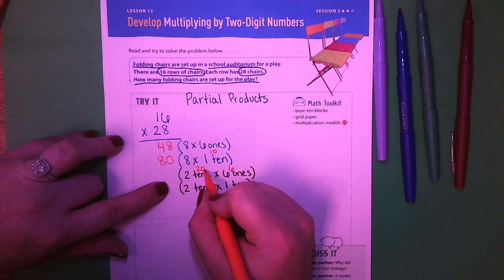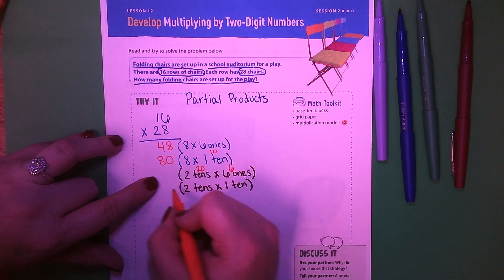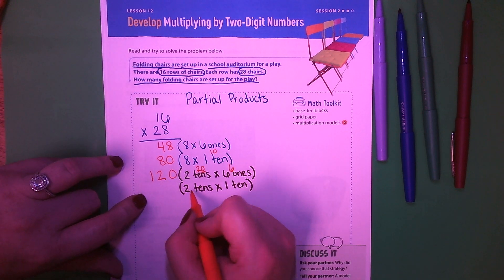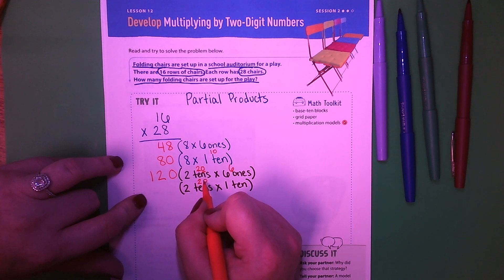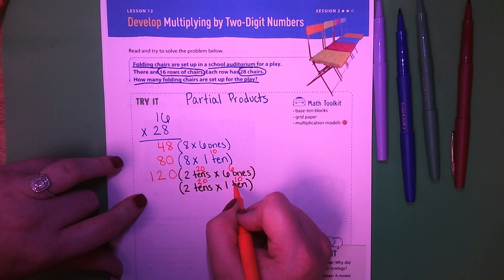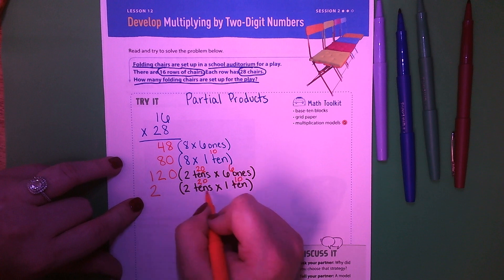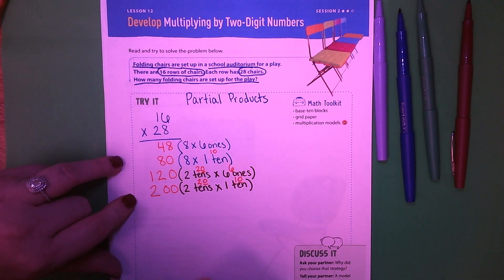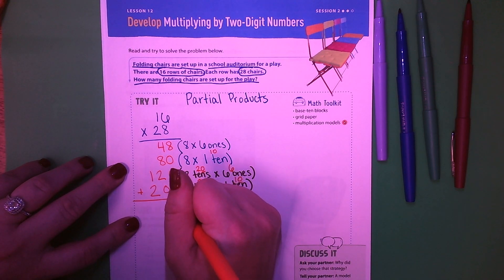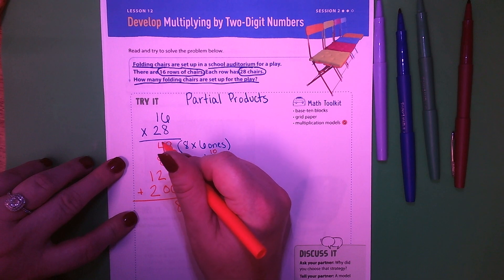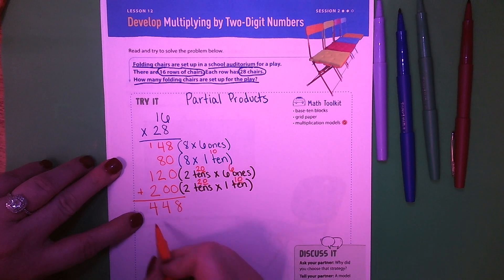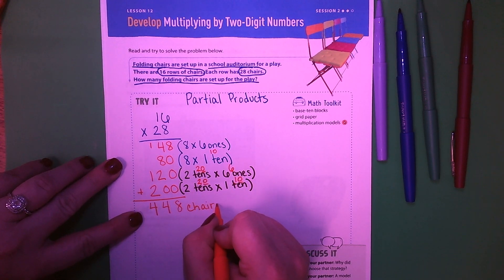8 times 1 ten. Well, 1 ten means that it's worth 10. So 8 times 10 is 80. 2 tens means that this is worth 20 times 6 ones. So that means this is worth 6. So 20 times 6. 2 times 6 is 12, but then we have that 0 that we need to move over. And finally, we need 2 tens, which again means 20 times 1 ten, which means 10. So 2 times 1 is 2. And then we have 2 zeros we need to add to the end. Now we can add all of this together. 8 plus 0 is 8, 8, 9, 10, 11, 12, 13, 14. So 448 chairs.